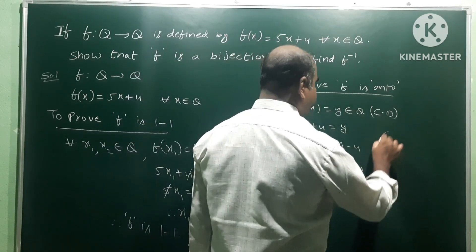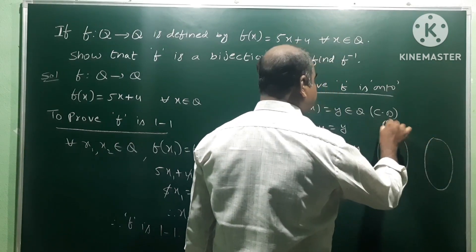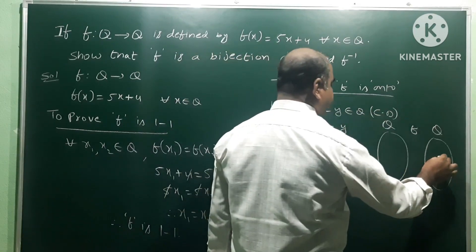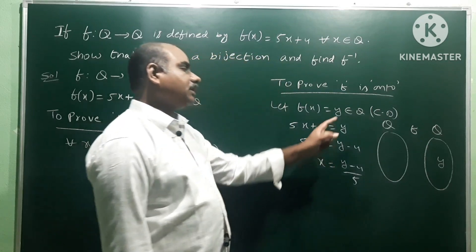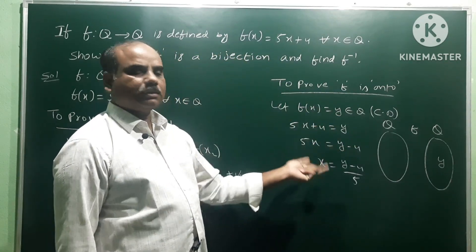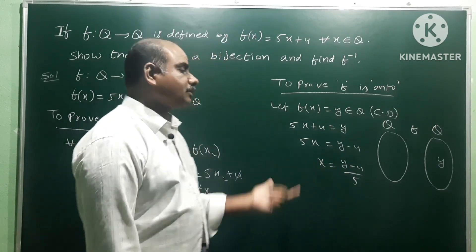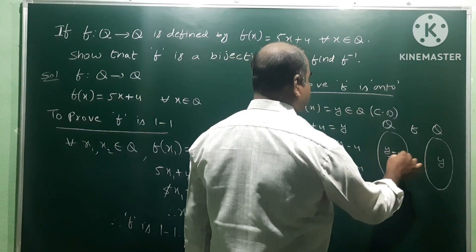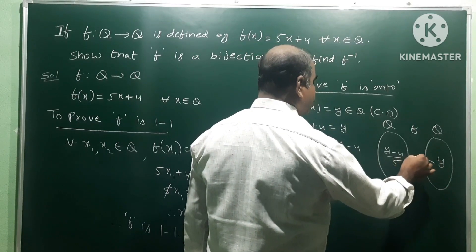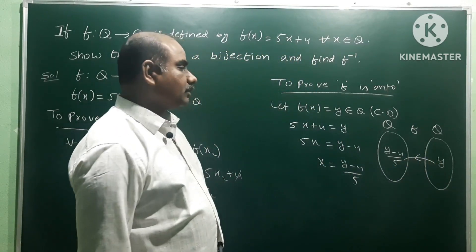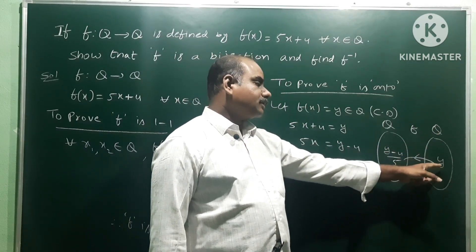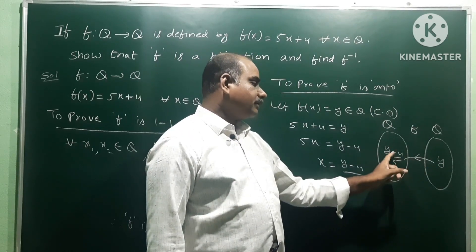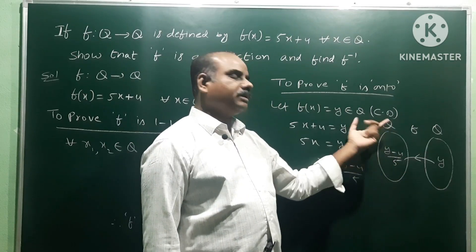Using a Venn diagram: here is the domain Q and the codomain Q. We take one element y from the codomain. The pre-image in the domain exists and equals (y - 4) / 5. For example, if y = 1, then (1 - 4) / 5 = -3/5, which is also a rational number. So for every y in the codomain a pre-image exists in the domain.